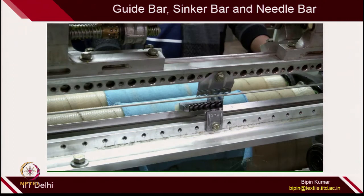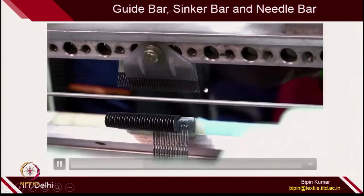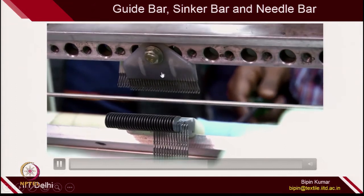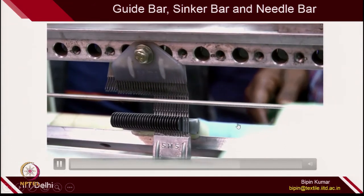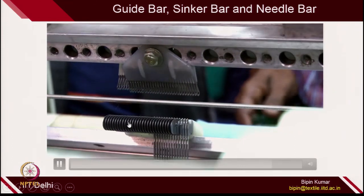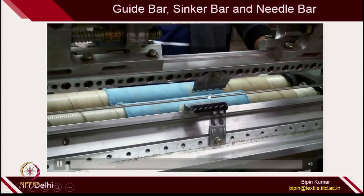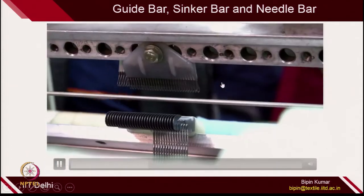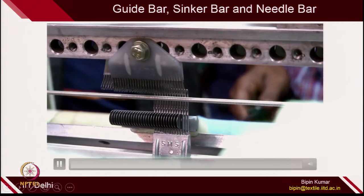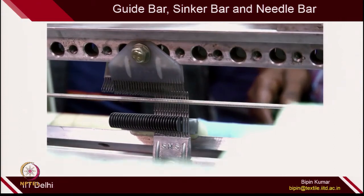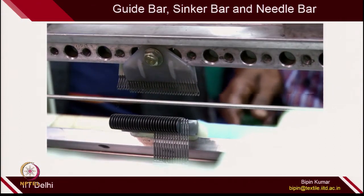These are the 3 blocks placed on the machine: guide bar, sinker bar, and needle bar. The needle block moves up and down. The other block is the guide, and the third block is the sinker. From the side, you can see one of each — sinker, needle, and guide on top. Let me show you these blocks before we move to the actual loop formation movements.